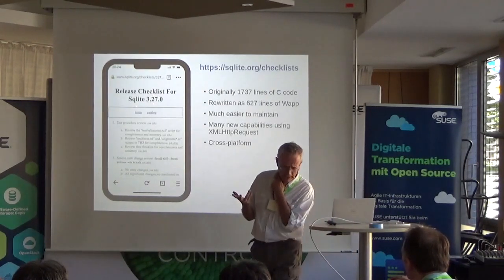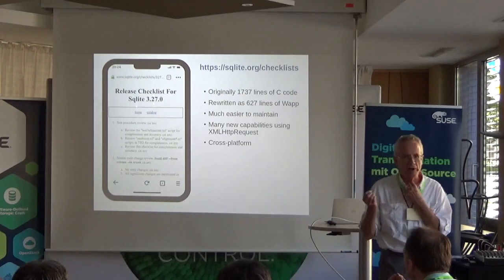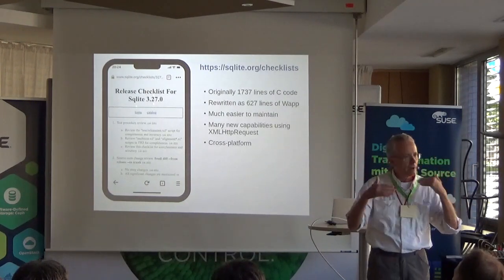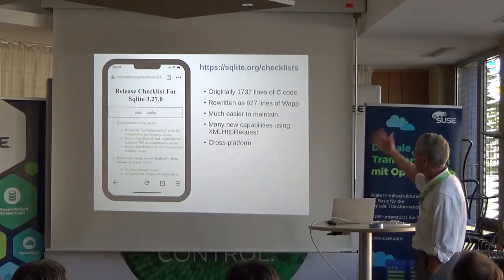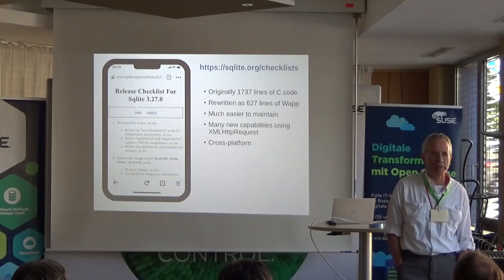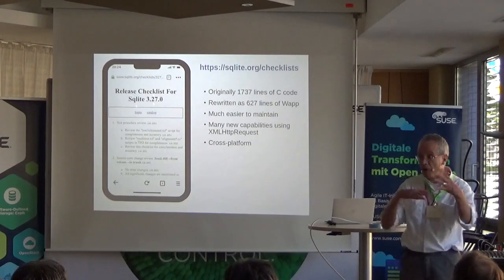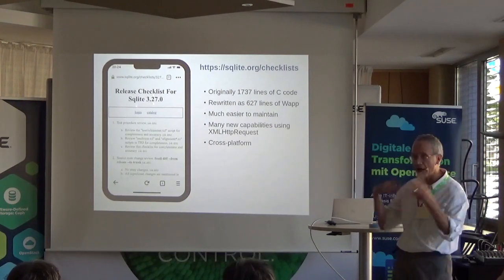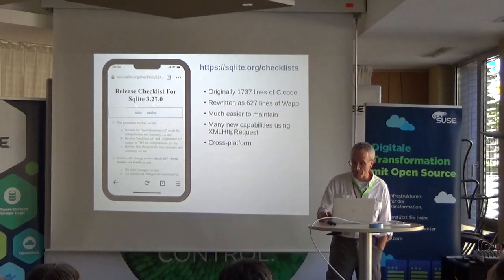With SQLite we're really big into testing, and we have big checklists we follow for each release. We've got a little web app so different developers can check off test progress — it takes about three days to run through the entire testing process. It was originally written in 1,700 lines of C code and was all but impossible to maintain. I rewrote it in 627 lines of WAP. It's much easier to maintain, has more capabilities, now dynamically updates itself using the XMLHttpRequest interface, and is also cross-platform — you can run it on your desktop, whereas before it had to be on the website.